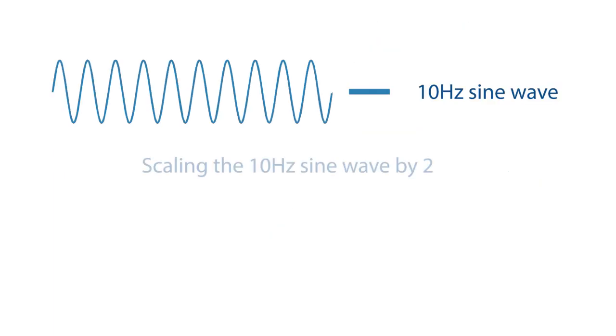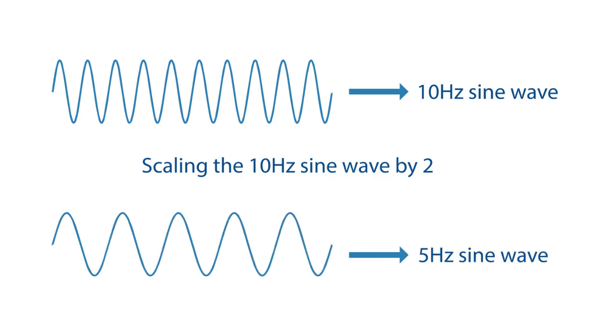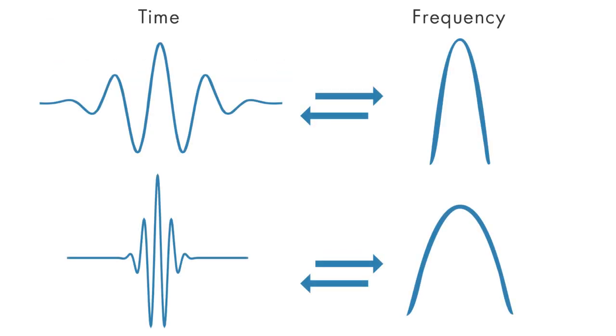For example, scaling a sine wave by 2 results in reducing its original frequency by half or by an octave. For a wavelet, there is a reciprocal relationship between the scale and the frequency with a constant of proportionality. This constant of proportionality is called the center frequency of the wavelet.